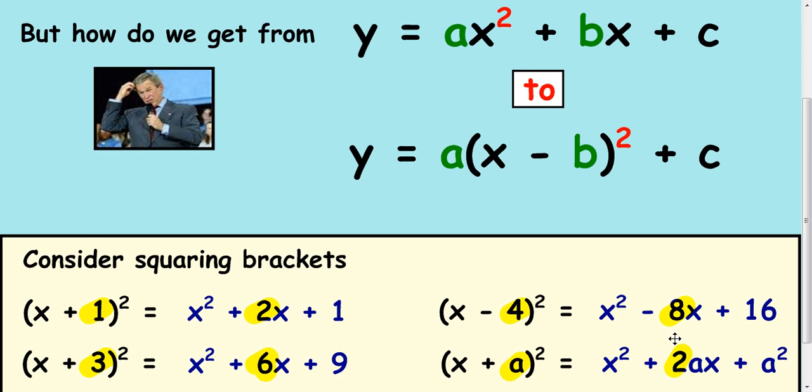So if you're reversing this process here to get back to the bracket, you can see that you half the middle term every time to get the value at the end. Same idea at the end here. If you get 2a, you half it to get 1a here. 2, half it to get 1. 6 and half it to get 3.